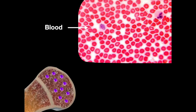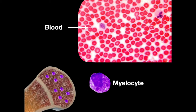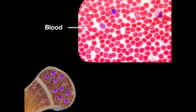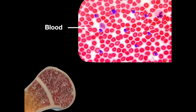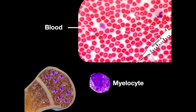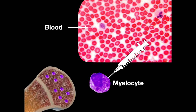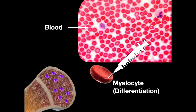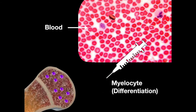Acute promyelocytic leukemia is a cancer where the bone marrow makes too many promyelocytes, which are immature blood-forming cells. Vitamin A is also used to treat promyelocytic leukemia because it stimulates promyelocyte differentiation.